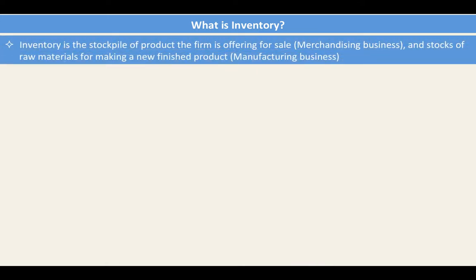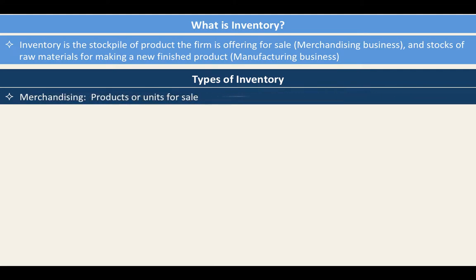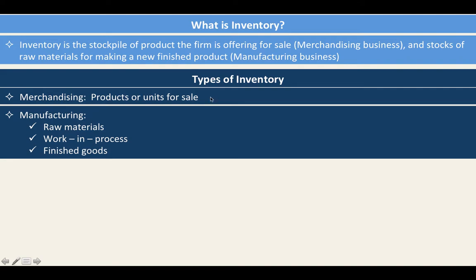Inventory is the stockpile of product the firm is offering for sale — that is for merchandising business — and the stocks of raw materials for making a new finished product for manufacturing business. So in summary, the types of inventory can be the products or units for sale for merchandising business, and for manufacturing business, the inventory can be raw materials, work in process, and finished goods.